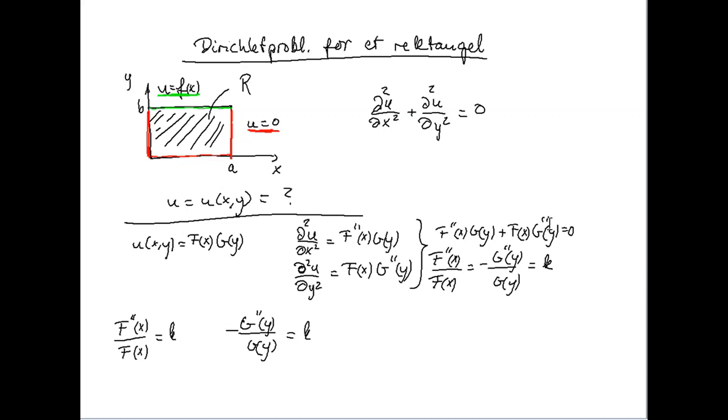Dividing with f and g, the product of f and g, we obtain that, as we did earlier for the wave equation, that this f double prime of x over f is equal to minus g double prime of y over g.